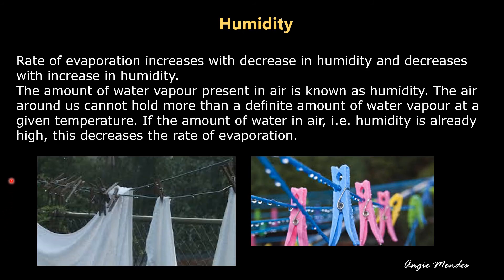Humidity: the rate of evaporation increases with decrease in humidity and decreases with increase in humidity. The amount of water vapor present in air is known as humidity. Air cannot hold more than a definite amount of water vapor at a given temperature. If humidity is already high, it decreases the rate of evaporation — this is why clothes take longer to dry in the rainy season. On a hot summer day, with lower humidity, evaporation is quicker.